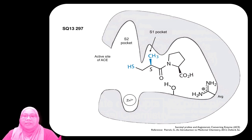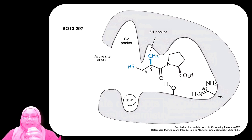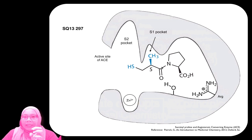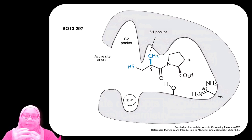Captopril is improved from SQ13297 — the CH3 group is retained from SQ13297, and the thio group is also included so it can still interact with zinc. This methyl group is important because it interacts with the S1 pocket. The rest of the molecule also interacts, mimicking the natural substrate, which is the dipeptide.